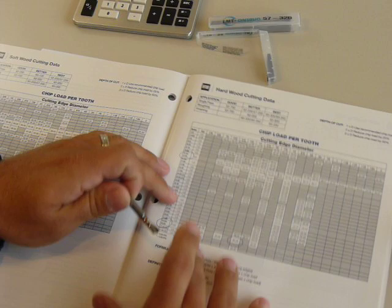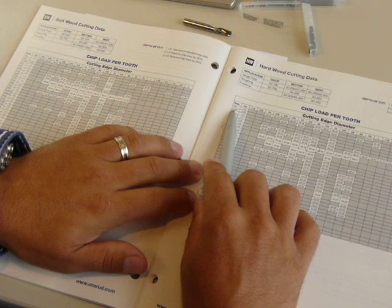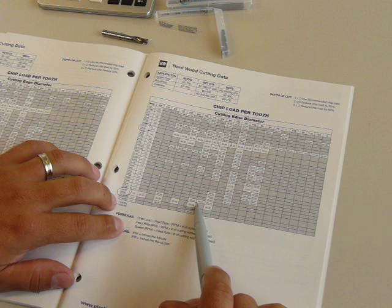And what we need to do is we know for a fact that this tool, the 65-023, is a quarter-inch diameter tool. So what we need to do is on the left-hand side of the chart, we have the tool series listed, and at the very top of the chart, we have our tool's diameter listed. What we need to do is cross the two to get the correct recommended chip load.